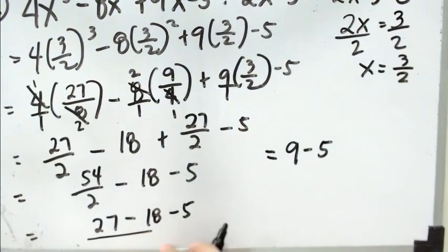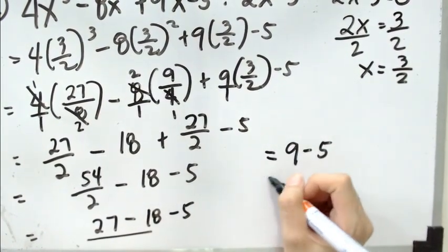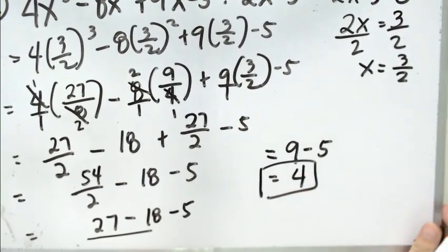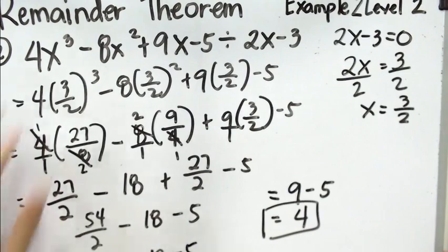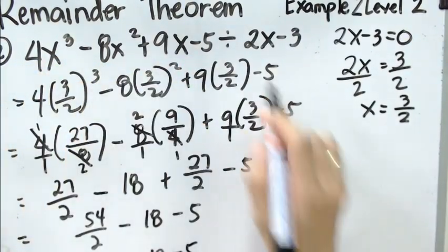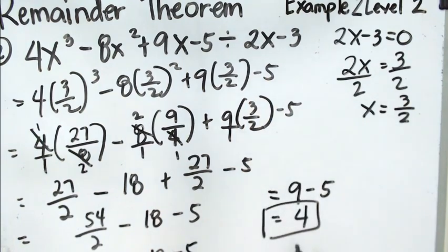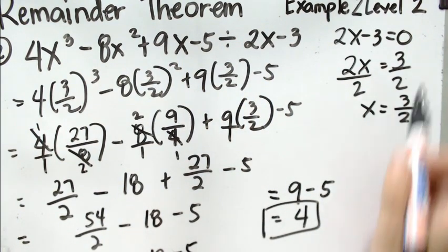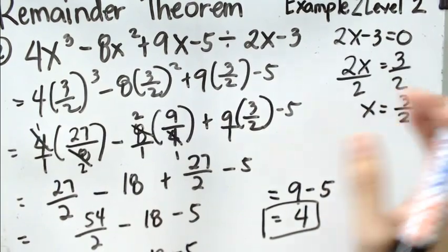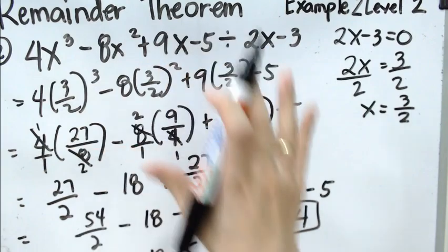27 minus 18 is 9 minus 5 is 4. Therefore, the remainder, when we divide 4x cubed minus 8x squared plus 9x minus 5 by 2x minus 3 is 4. Again, when we say remainder, we simply evaluate the divisor and then use that value to substitute in the given polynomial.